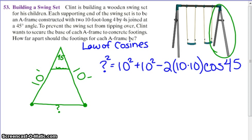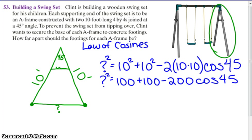I happen to know that 10 squared is 100. So it's 100 plus 100, that's 10 times 10 times 2, minus 200 cosine of 45. Adding those two together, the two 100s here, I've got 200 minus 200 cosine of 45.